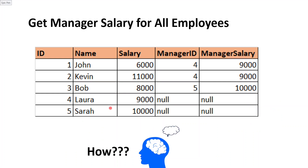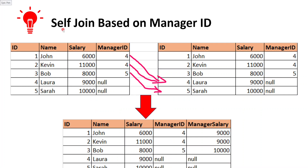In order to get the solution, we have to start thinking how we can bring this output. The simple approach our mind should think of is: we have to bring employee salary along with manager salary in the same record. If that is possible, then we can easily compare employee salary with manager salary neck to neck and find out who is earning more than their manager. So we have to visualize this kind of table.